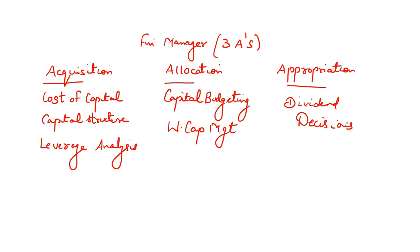All these points are available here, so let me quickly revise: a financial manager always focuses on three A's. First is acquisition — from where will we arrange funds? Second is allocation — where will we invest those funds? Third is appropriation — from the returns generated, what percentage of dividend will we distribute among our shareholders?